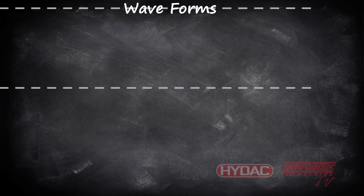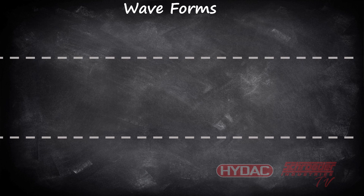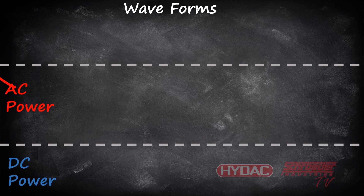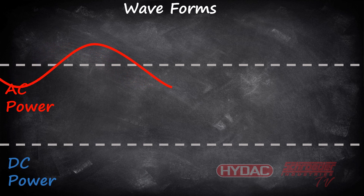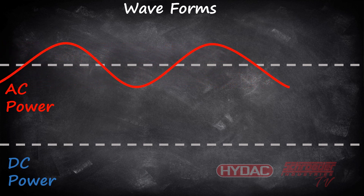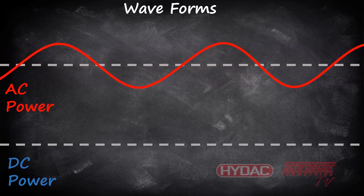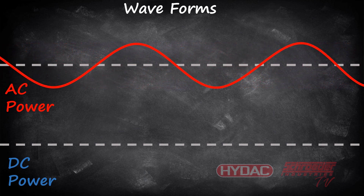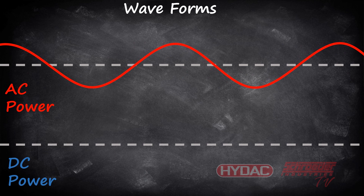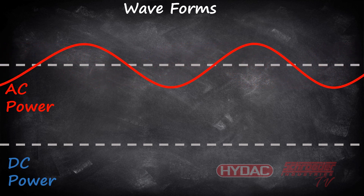Let's talk about the waveforms of AC and DC power. Alternating current AC is current where the flow of electric charge is constantly changing directions. Alternating current is mostly used to transmit power on power lines. In the United States, the frequency at which the current alternates is 60 hertz. Some other countries use 50 hertz as a standard.